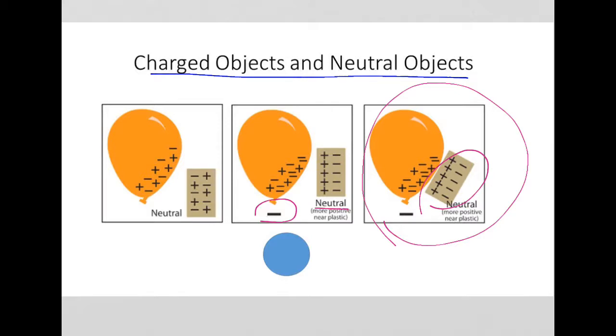Now, notice what happens to the neutral object. This is going to be something called polarization, where the neutral object, while it is still neutral, the positives and negatives cancel each other out for a total charge of zero.